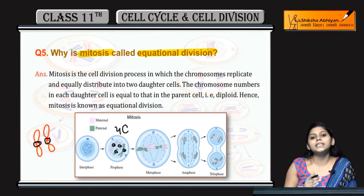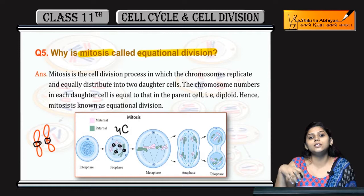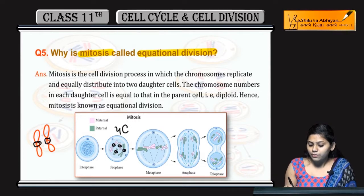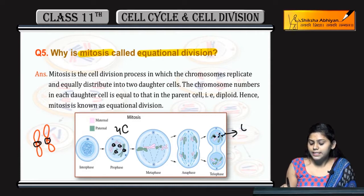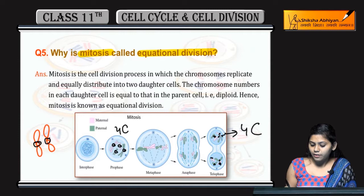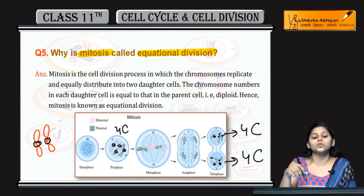When we look at mitosis cell division, we count the chromosomes: 1, 2, 3, and 4 — this daughter cell has 4 chromosomes. The other daughter cell also has 1, 2, 3, and 4 — this also has 4 chromosomes.